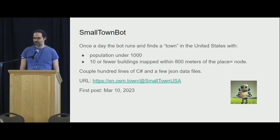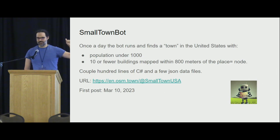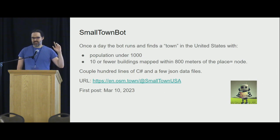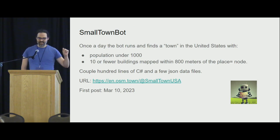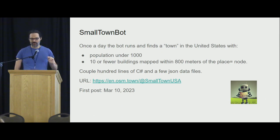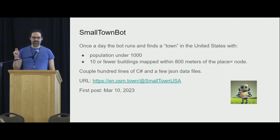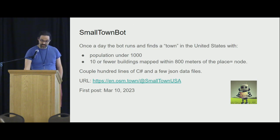Once a day, I have a little program that runs and it finds a small town in the United States. The criteria we use is anything that is a place node inside of OpenStreetMap that has a population tag that is a thousand or lower. Then it queries Overpass and will post a town as soon as it finds one of these that has 10 or fewer buildings mapped nearby. It does not have to look very hard — only two or three places to find something that needs to be posted.